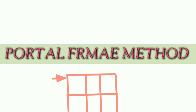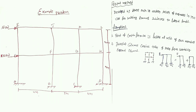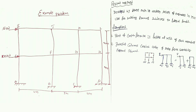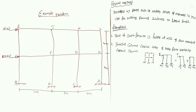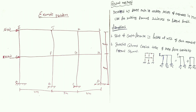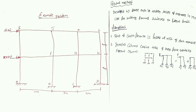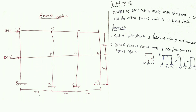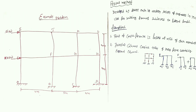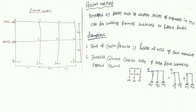In this video we are going to learn about one of the approximate analysis methods, which is the portal frame method. Here you can see an example portal frame subjected to lateral loads — 50 kilo-Newtons and 100 kilo-Newtons acting at different heights of four meters at different stories. The joints are named A, B, C, D and so on, and the frame has different base spacings.